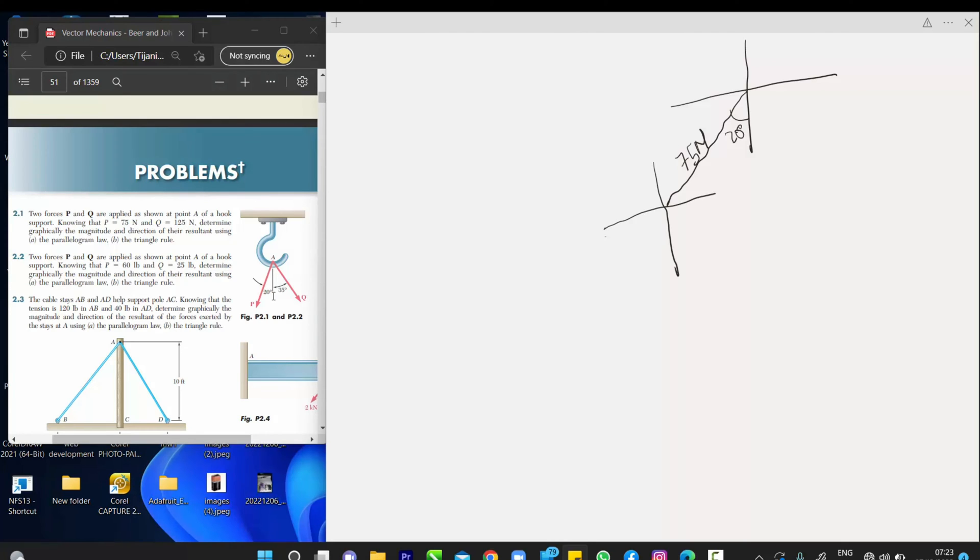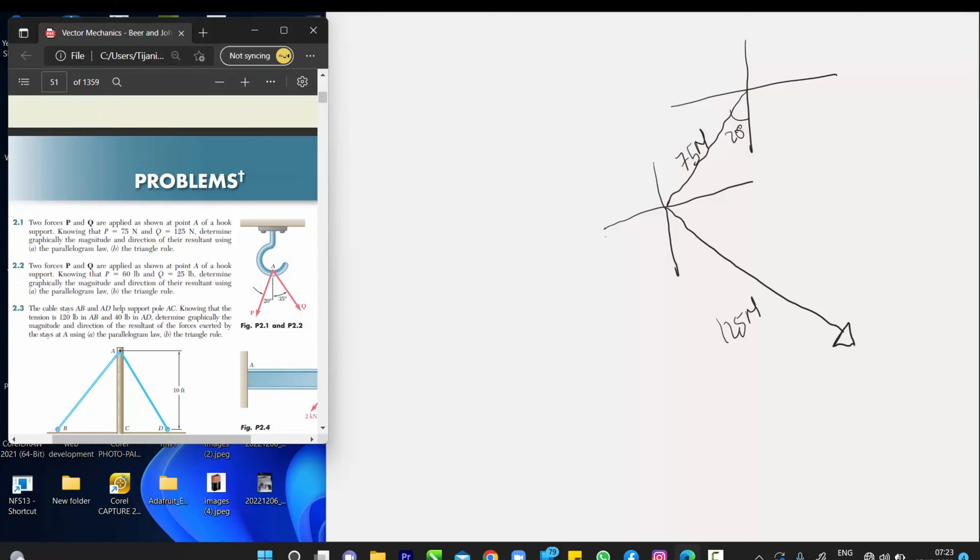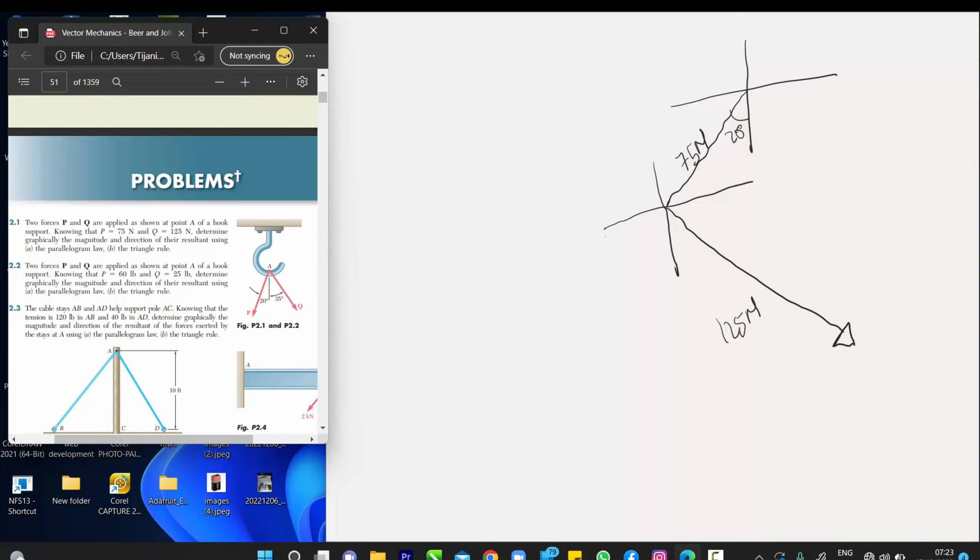So, respect always the direction by which it is traveling. So, this is our Q, which is 125 Newton. And the distance from this wall to this is 35. So, 35 degree.